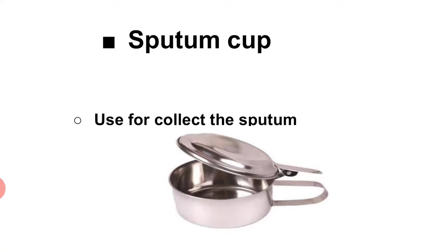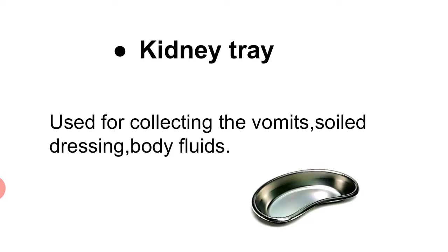Then is sputum cup. It is used for collecting the sputum. Next is kidney tray. It is used for collecting vomit, soiled dressings, and body fluids. Kidney tray is mainly used for vomiting — if there is vomiting it can be used, and it can also be used for collecting sputum.